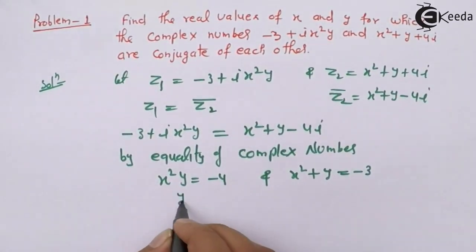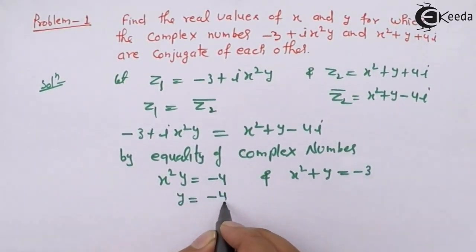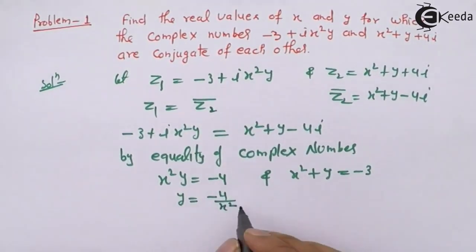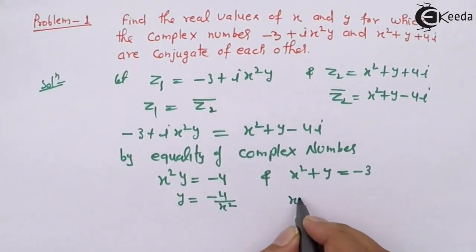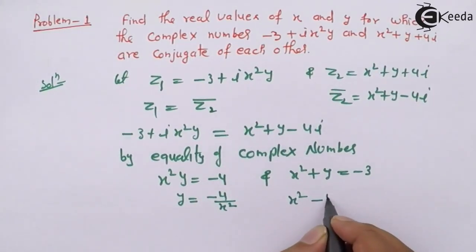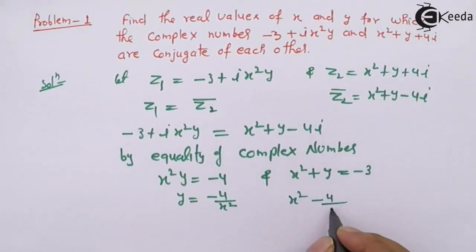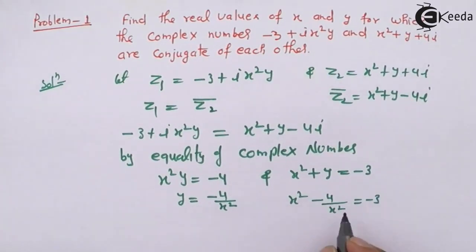यहाँ से y की value निकालते हैं: y equals to minus 4 upon x²। यह value यहाँ दूसरी equation में रखेंगे, तो हमें मिलेगा: x² minus 4 upon x² equals to minus 3।